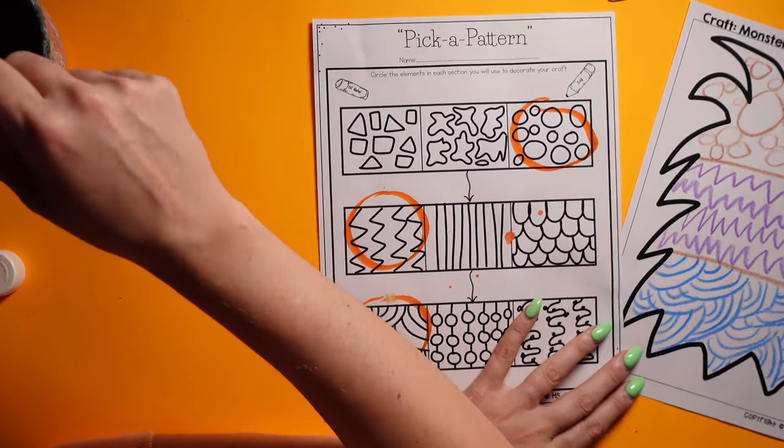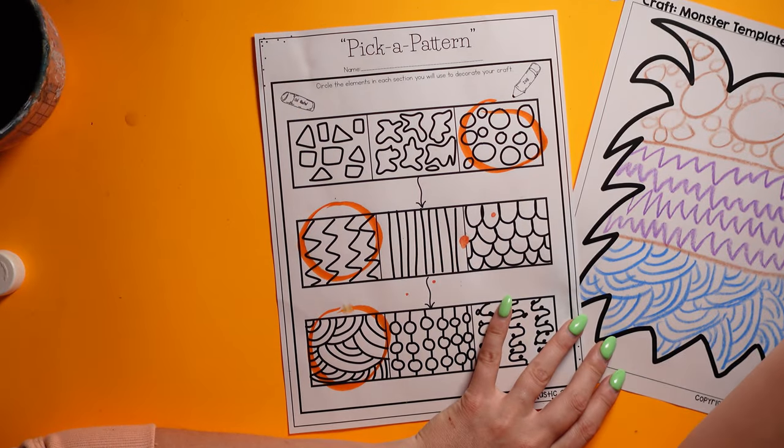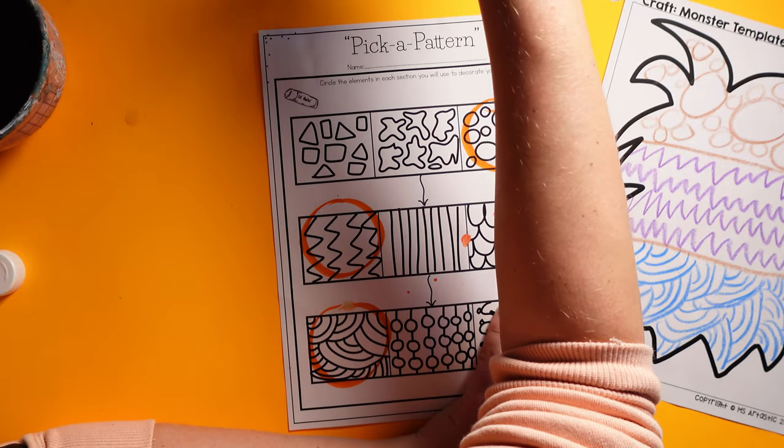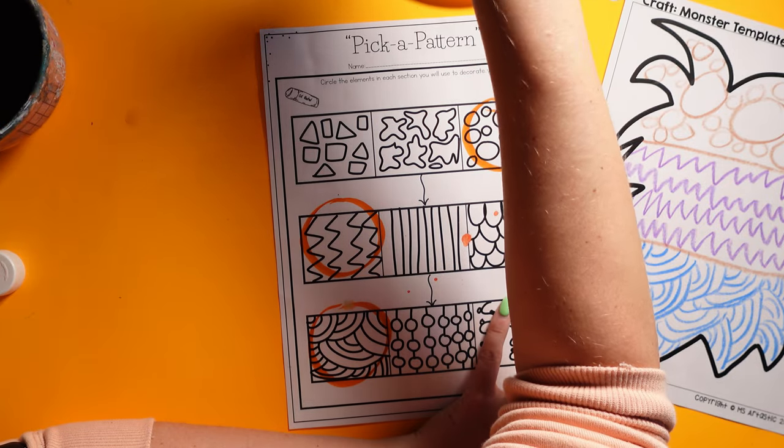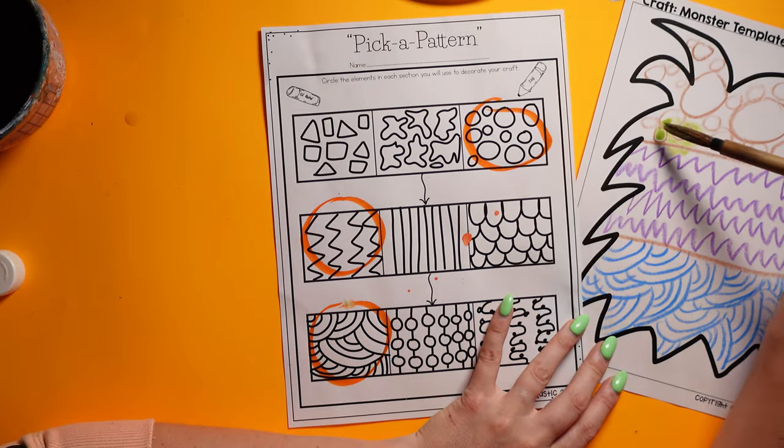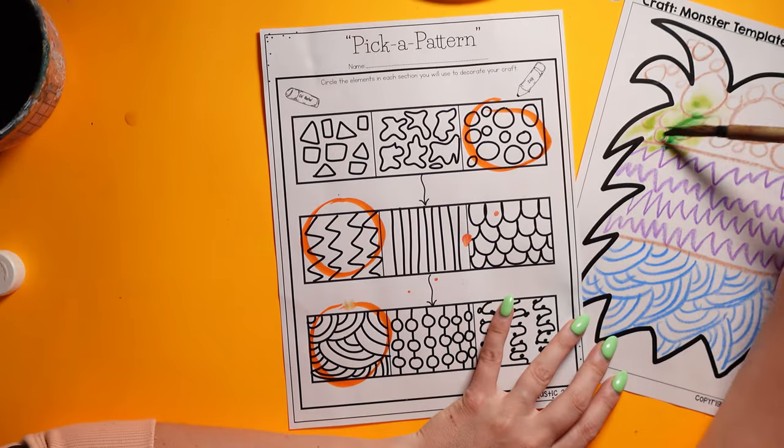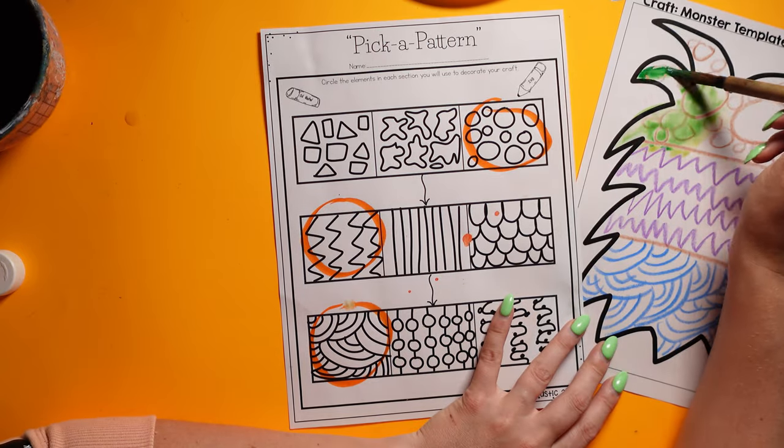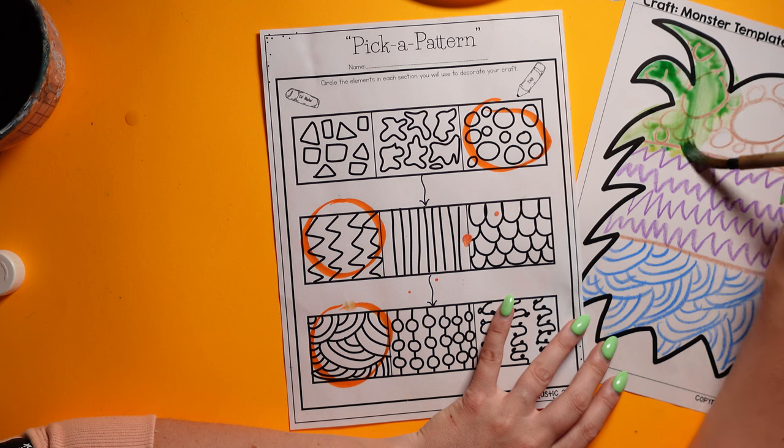All right. So we got our monster all patterned out. And so I'm going to pick a monster color. Actually, I want to do green monster. I was going to do red, but green it be. I like green. Maybe I'm going to do this darker green. Yeah. That's cute.